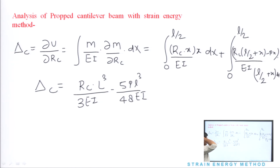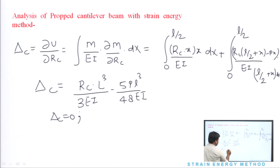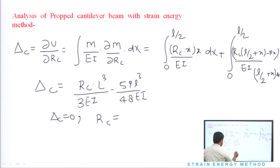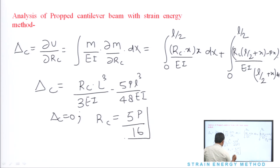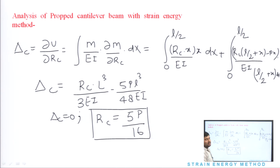Ab haara jo structure hai, basically stable hai, means ki delta C ki jo value hai, woh zero hai. Is saari value ko zero put karo — yani ki 5PL³/48EI ko udhar term karo — toh RC ki value hamare paas ultimately aayegi: RC = 5P/16. This is the vertical reaction at point C. Hamare paas ek reaction aa gayi; baaki equilibrium equations use karke nikal sakte hain.